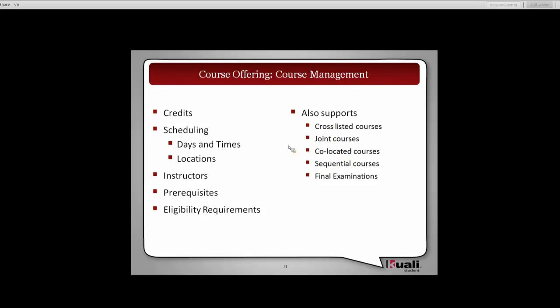As previously alluded to and demonstrated by Christina, whether it's the rollover or create from catalog process that you use to create your course, in many instances you're essentially creating a course shell. There's a lot of data or attributes that either won't be there or you'll need to make adjustments to. Some course management is going to have to take place. You'll be able to go in and, if it's a variable credit course, set or adjust the credit limits.